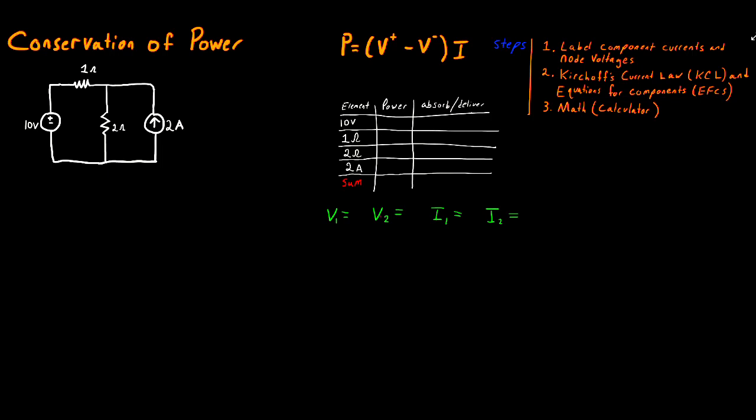In this video, I'm going to be going over a conservation of power problem. These generally start out with a circuit analysis problem where you have to find all the voltage and current values within your circuit. Then there's an extra step at the end where you have to verify that the voltage and current values you found result in a total power for your circuit equal to zero. I'm going to start this problem off with the circuit analysis part of it.